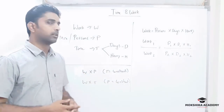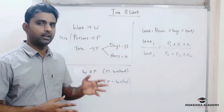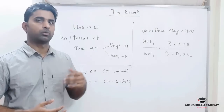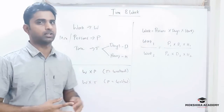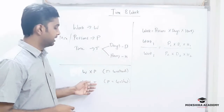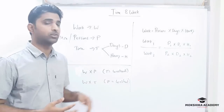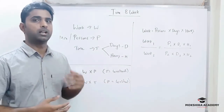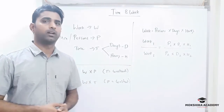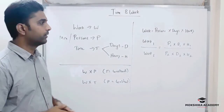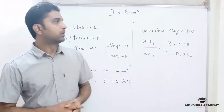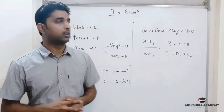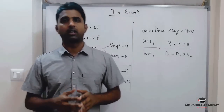Work depends on the number of persons and time. Work means number of persons worked for number of days and number of hours — Work equals P into D into H.